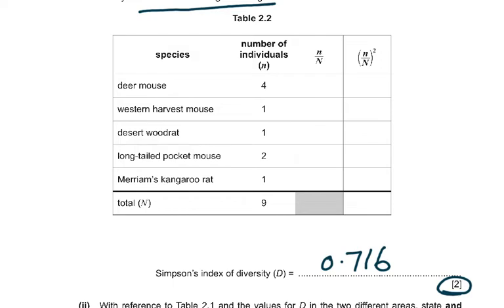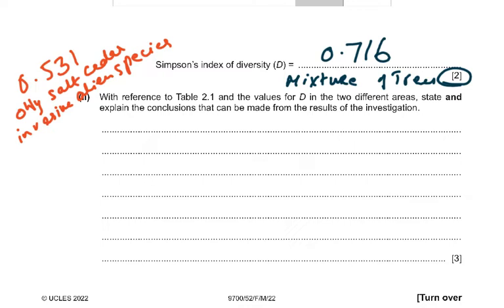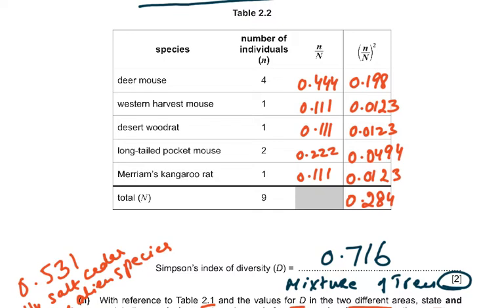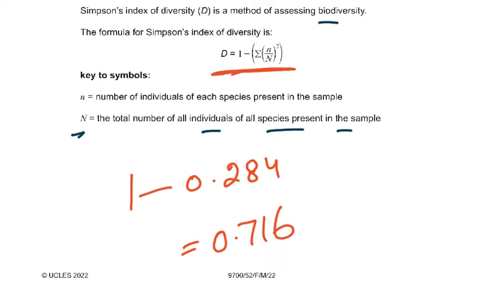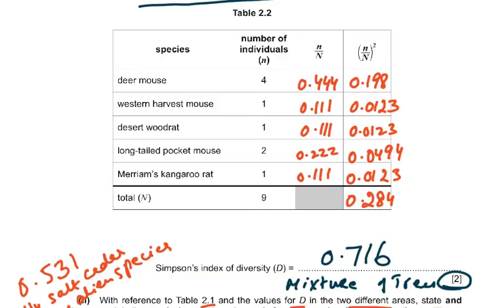The correct answer for Simpson's index of diversity for the mixture area is 0.716, with 0.717 and 0.718 also accepted. The working: 1 minus the sum of (n/N) squared equals 1 minus 0.284, giving 0.716. If you did not correctly subtract from 1, you would get the answer wrong. For the correct answer of 0.716, you receive two marks.